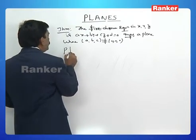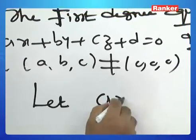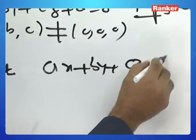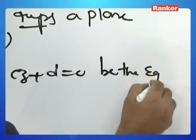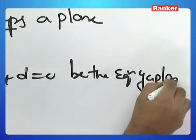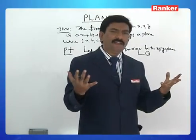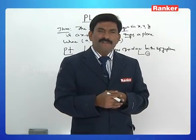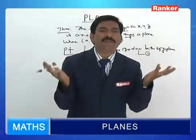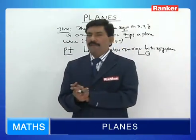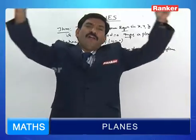Let us take the proof. Let AX + BY + CZ + D = 0 be the equation of a plane. A plane is a surface such that the line segment joining any two points on it lies wholly on it. Let A(X₁, Y₁, Z₁) and B(X₂, Y₂, Z₂) be two points on it.